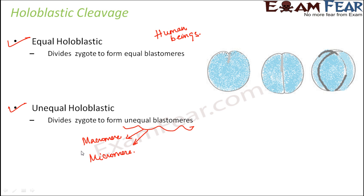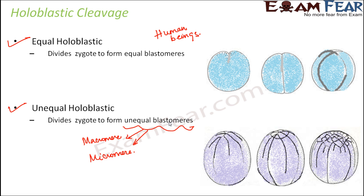So to summarize: holoblastic means the division is complete. If the resulting blastomeres are equal in size, that is equal holoblastic; if they are unequal in size, that is unequal holoblastic. This type of unequal holoblastic cleavage takes place in organisms like frogs, amphibians, and even lower fishes.